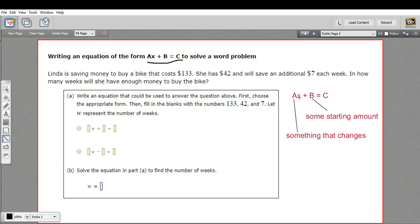And that thing that changes gets multiplied by the variable. And often that variable has to do with a time period. So if something happens every hour, it changes by a amount every hour. Let's read this one and see what we've got here.